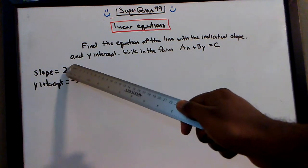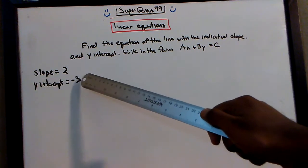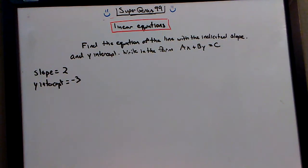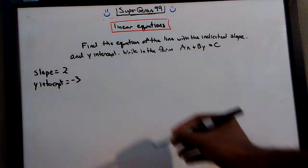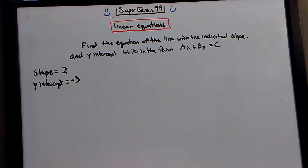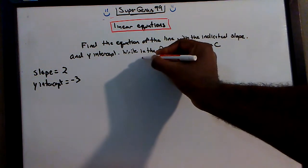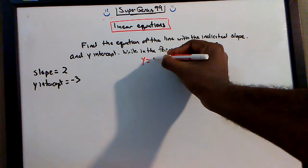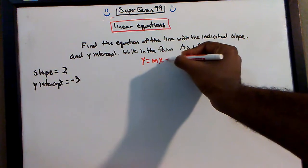So that gives us the slope of 2 and a y-intercept of negative 3. If they give us a slope and a y-intercept, then I would always start off by writing it in the slope-intercept form. Slope-intercept form is, let me write that in another color, y equals mx plus b.